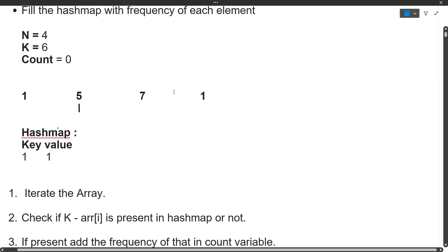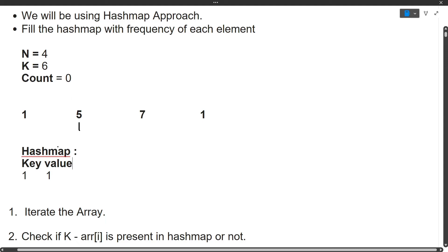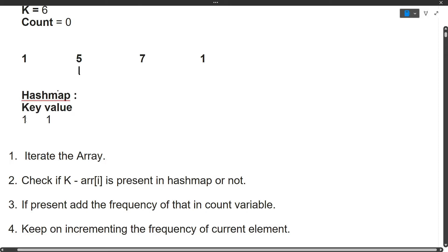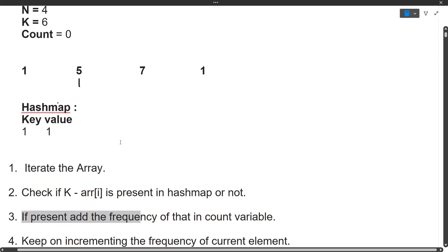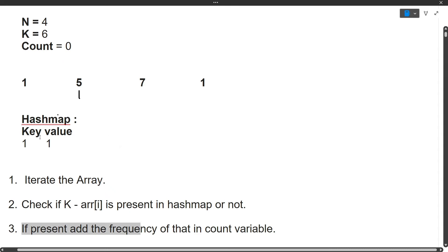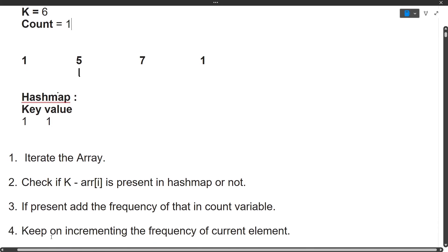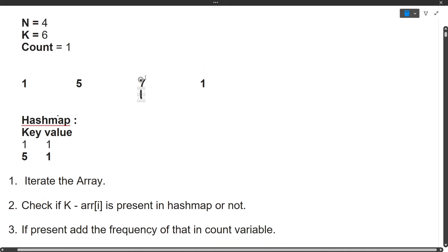Now we move to the next element, 5. We again check if K minus current element — 6 minus 5 — is present in the HashMap. 6 minus 5 equals 1, and 1 is already present in the HashMap. So the third point is valid: add the frequency of 1 to the count variable. Frequency of 1 is 1, so count becomes 1. Then the fourth point always runs: we add 5 to the HashMap with frequency 1.